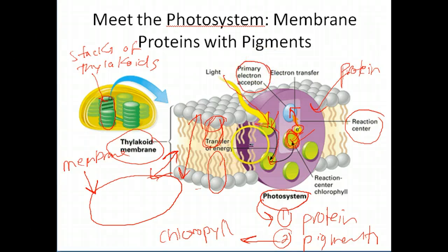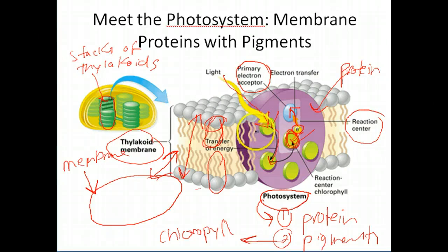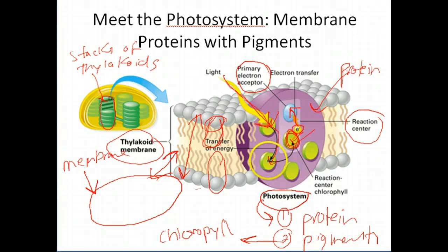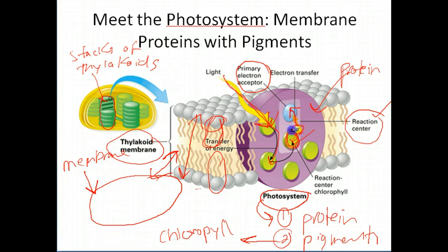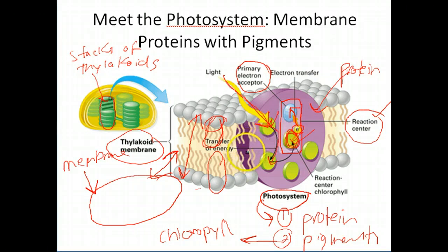There's a lot of stuff here, but understanding this basic concept of the photosystem is pretty essential. We'll go over this in class and in the next screencast when we talk about the light reactions process. Only within the reaction center — essentially this square right here — are there any exchanging of electrons. The photosystem is the basic unit of photosynthesis, so it's very important. It's occurring in the thylakoid membrane, so when I draw this thylakoid membrane, I'm essentially drawing this phospholipid bilayer with proteins embedded in it.